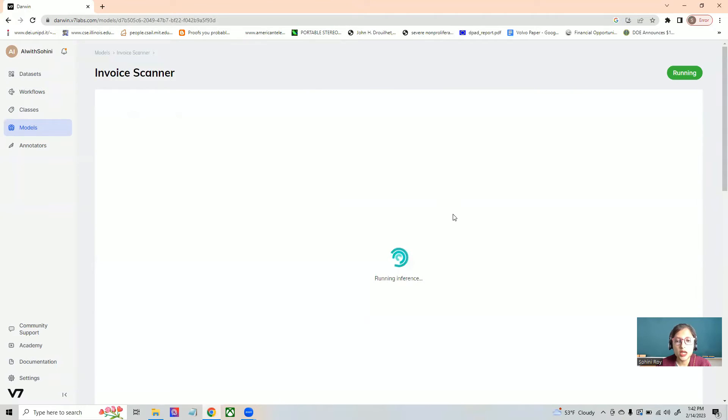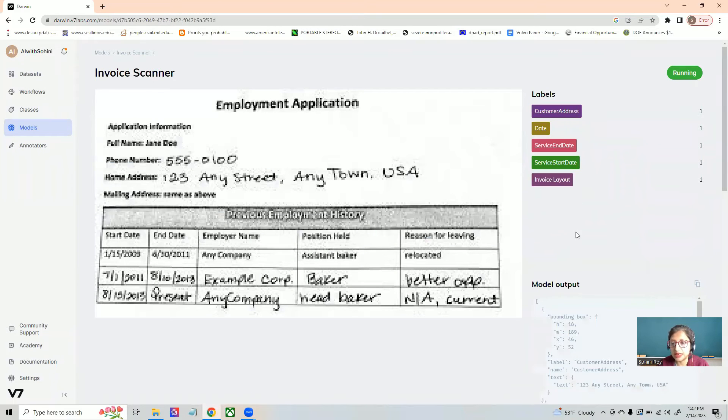So let's start with the first one, which is actually a poor quality invoice that has text as well as typed data.